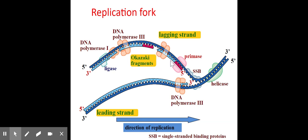The lagging strand is built in little sections called Okazaki fragments, named after the scientist who discovered them. It's a highly coordinated process involving multiple enzymes to get this strand built seamlessly. You don't need to know all the enzymes involved — just understand why replication happens in such a fragmented way on the lagging side.